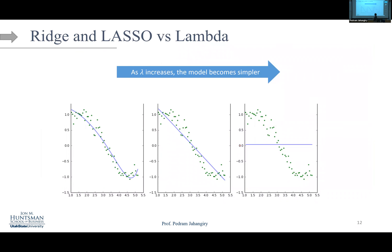Here's a comparison of ridge versus lasso versus lambda. As lambda increases, the model becomes simpler — you're penalizing more, restricting the model, getting a little more bias but reduced variance. Going from left to right, the model gets simpler: bias increases while variance decreases.